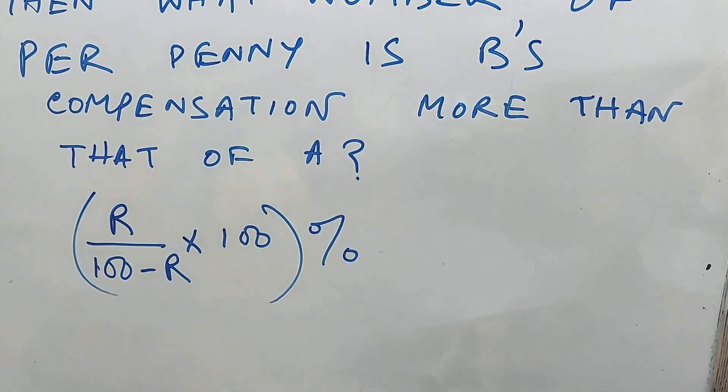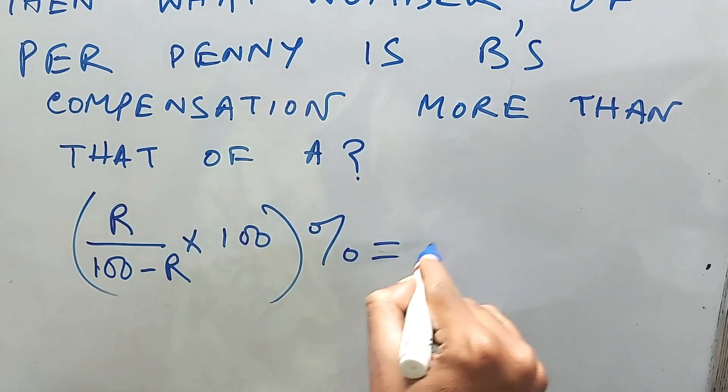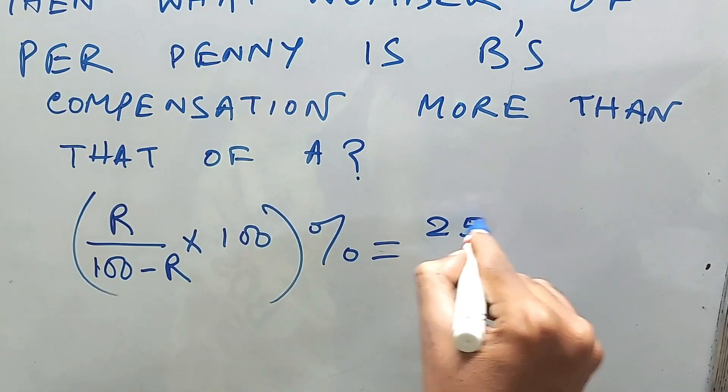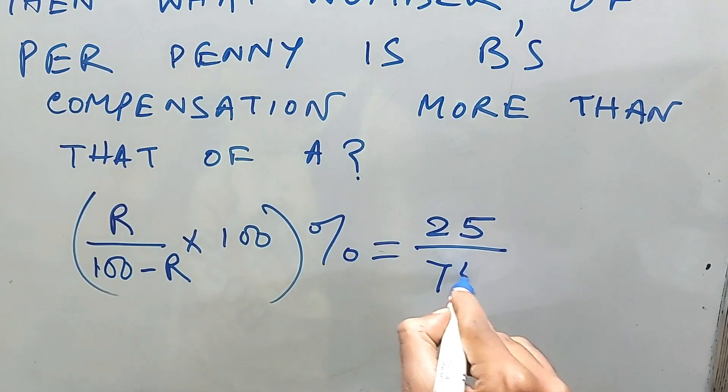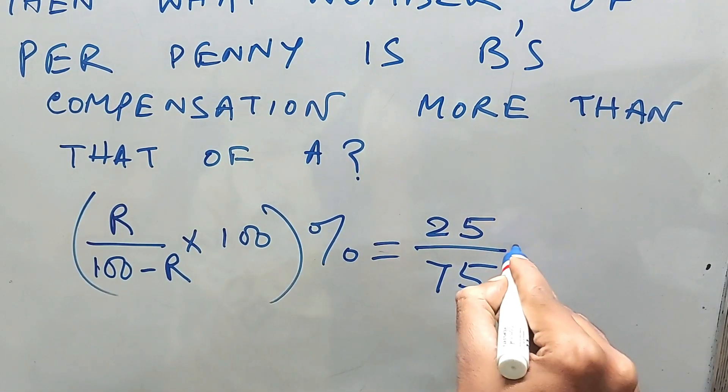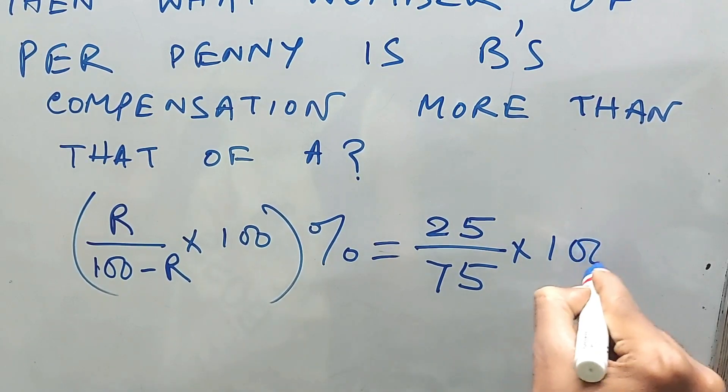So this one is equal to 25—it's the R—and 100 minus R is 75, into 100. Don't forget this.